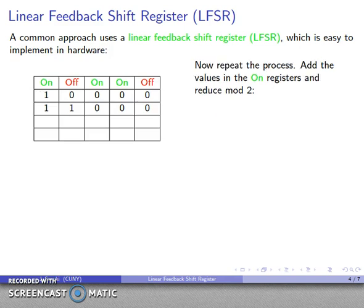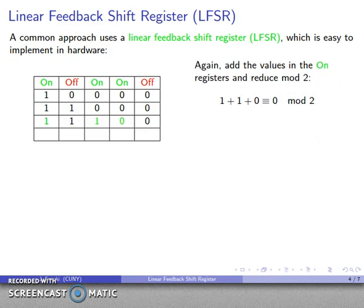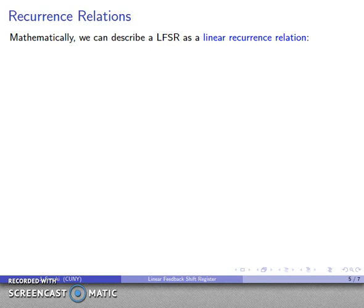And now, I'm going to repeat the process. So I'll take the numbers in the on registers. I'm going to add them together, 1, 0, 0. That's going to be 1 mod 2. I'm going to shift everything over. I'm going to drop the computed value into the new place, and there we have it. And again, I'm going to add the values in the on registers. That's going to be 0 mod 2. I'm going to shift everything over. And I'm going to drop the computed value in the new place, and I'm going to repeat this indefinitely.